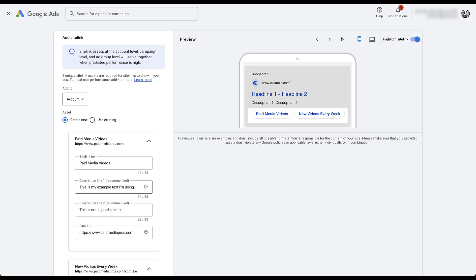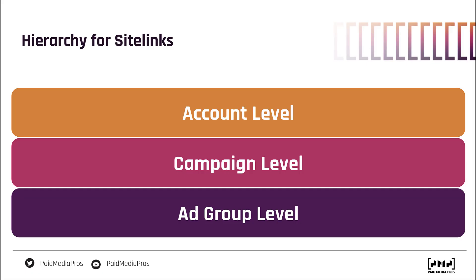But before saving, let's revisit the add-to section at the top, because the hierarchy of where you add your site links will make a difference as to what shows for which portions of your account. As you saw in the Google Ads interface, you can add site links to the account, campaign, or ad group level. Depending on where you add your site links, it's going to impact what shows where.